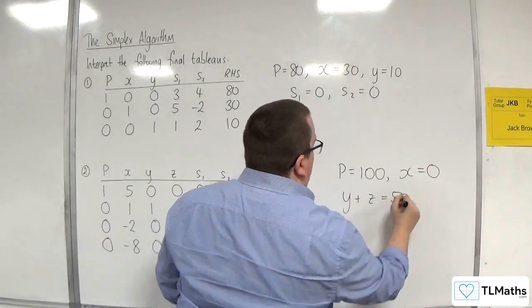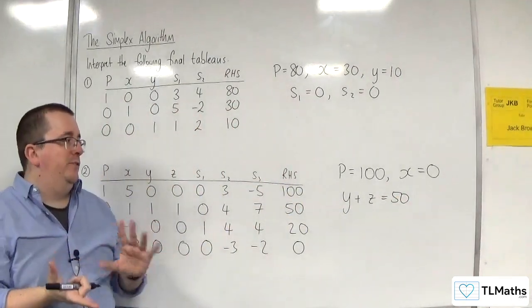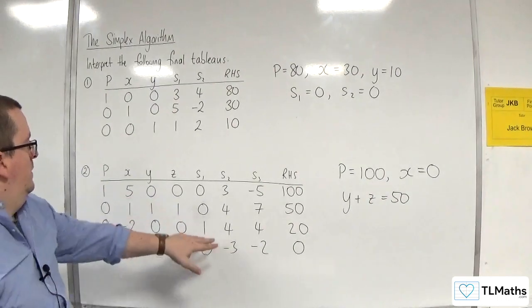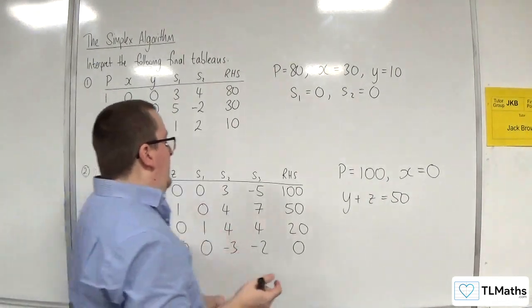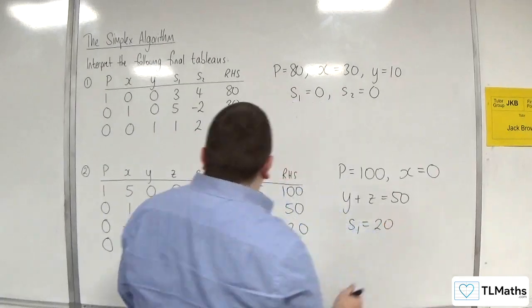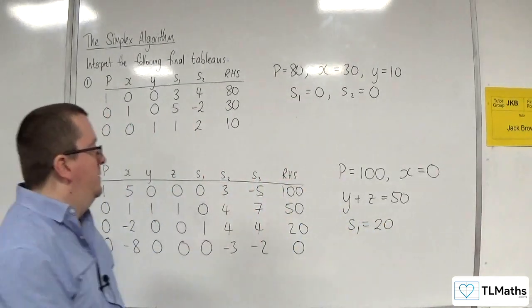So all I know is that the two values, Y and Z, must add up to 50. S1 is basic, so that's equal to 20. And the S2 and S3 are going to be 0.